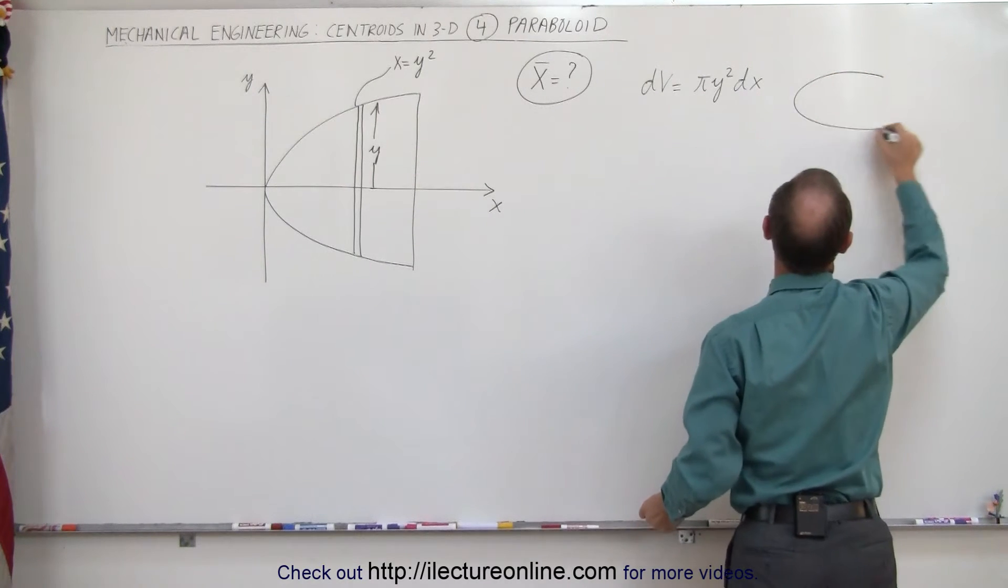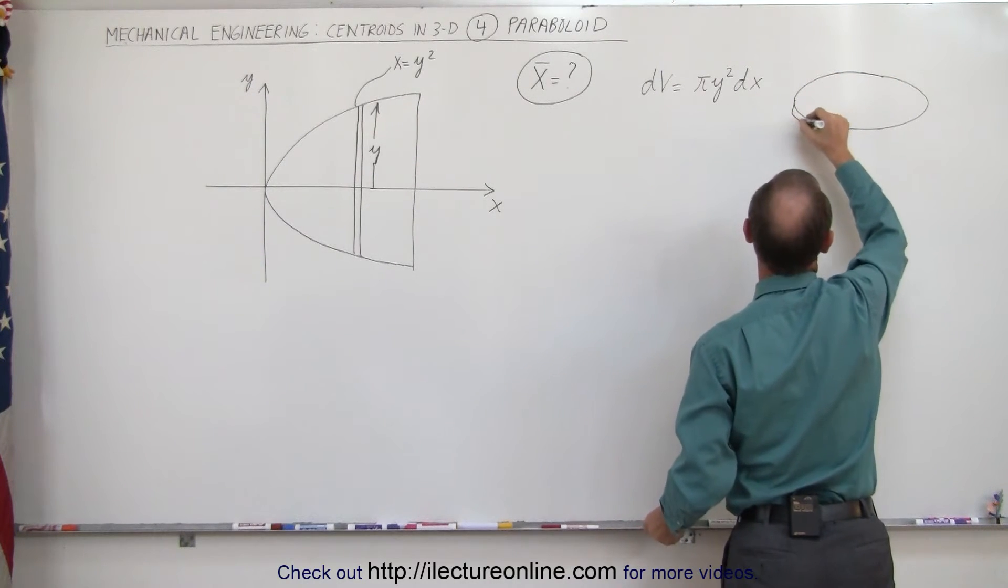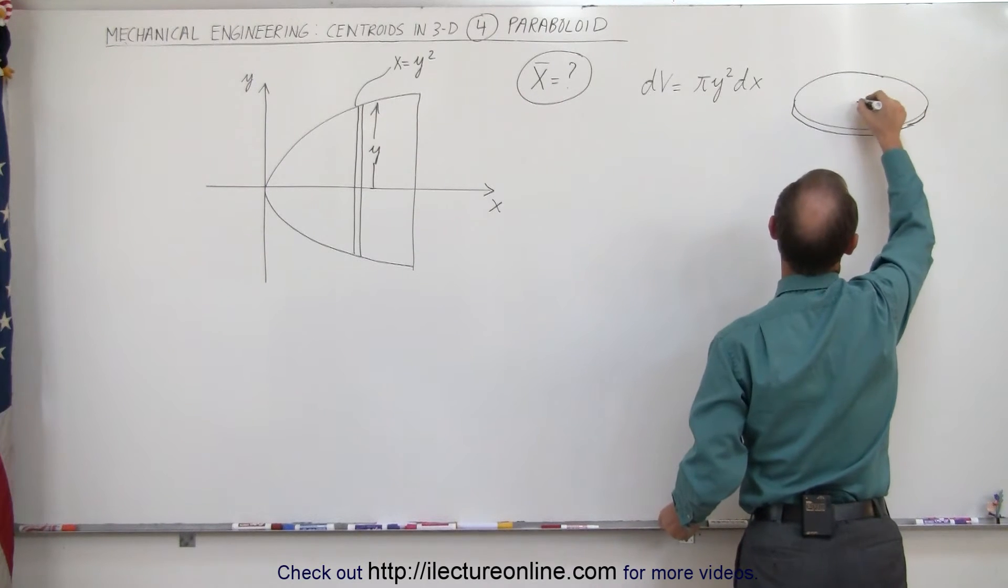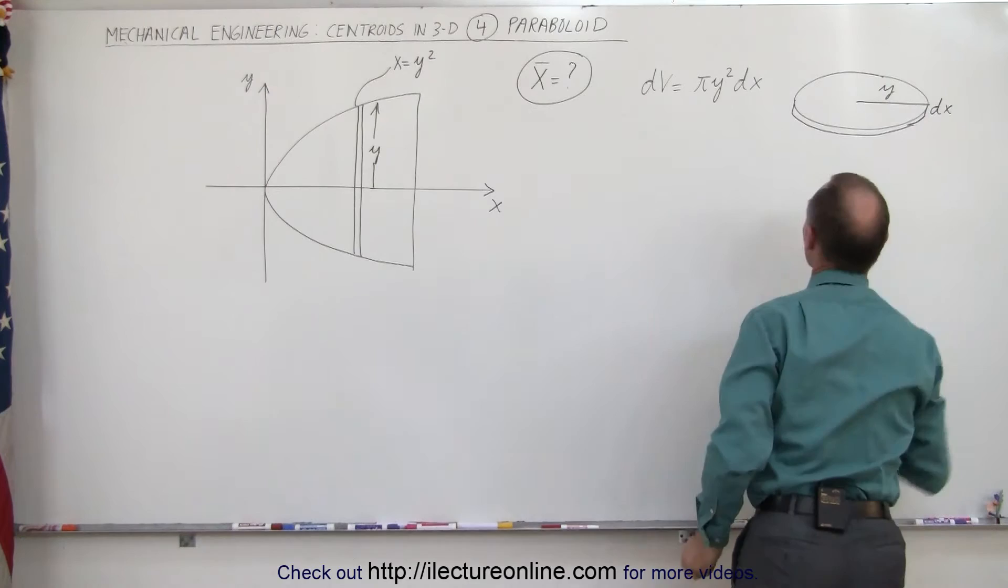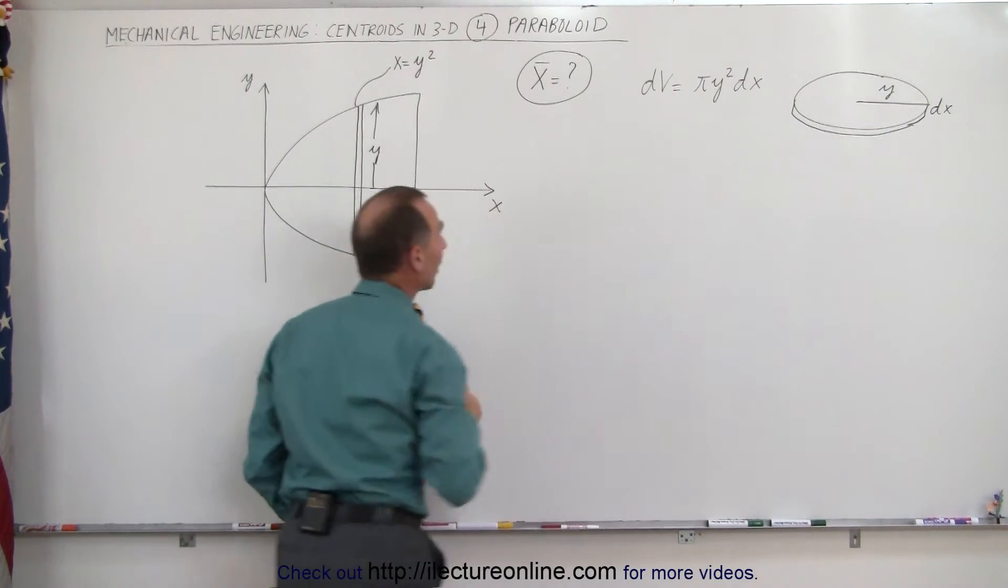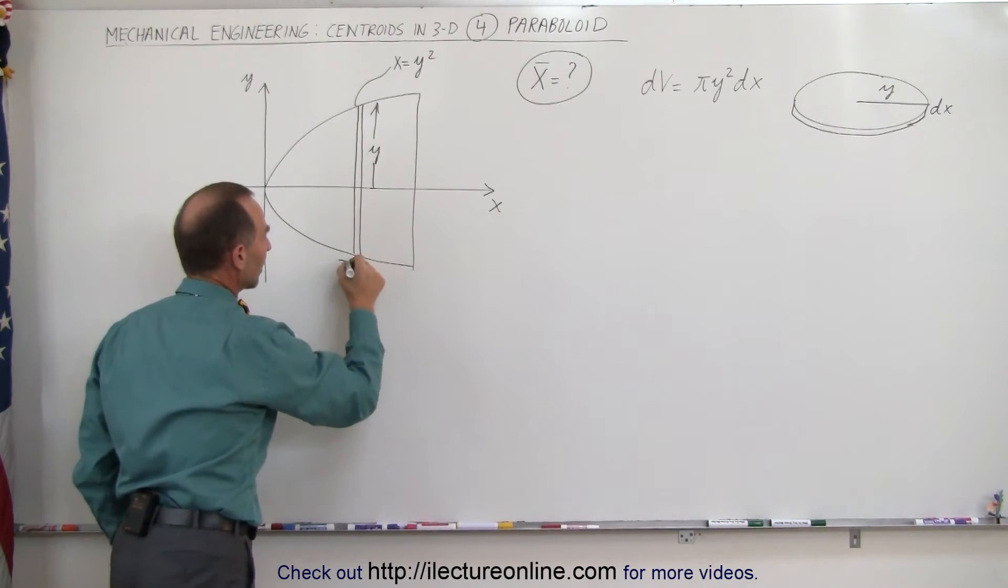Notice if we draw it out, it looks like this - a small little slice. The radius is equal to y, and the thickness is equal to dx. Therefore the dv is equal to πy²dx. There's your small little dx right here.